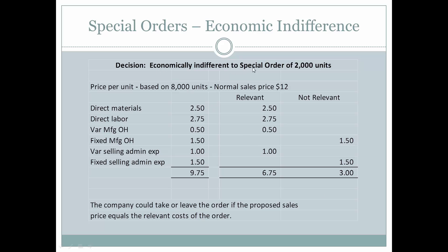Now, what if a company would be economically indifferent to the special order of 2,000 units? They would be looking at all of the relevant costs associated with the order — specifically, if they were to sell this, they at least want to make $6.75 and cover their costs. The company could take or leave the order if the proposed sales price equals the relevant costs of the order. In what scenario would you sell an item at $6.75 when it just covers your costs? If you have downtime in your factory and you want to keep your people engaged. So the minimum price they would accept on an order would be $6.75, and if the selling price is more than $6.75, they would consider it.